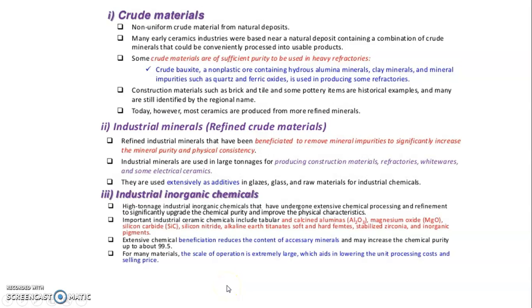Extraneous chemical verification reduces the content of oxygen minerals and may increase the chemical purity up to 99.5%.